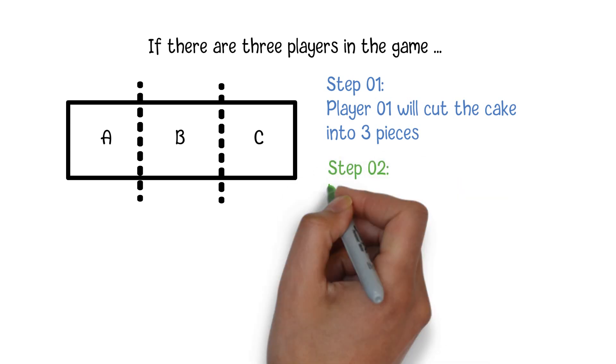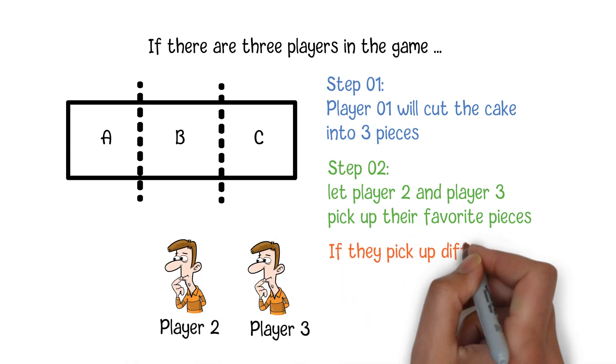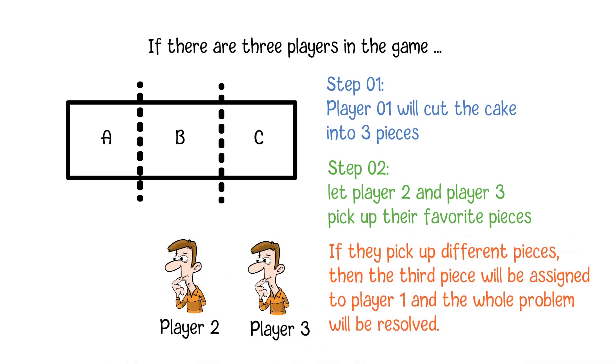The second step, let player 2 and player 3 pick up their favorite pieces. If they pick up different pieces, then the third piece will be assigned to player 1 and the whole problem will be resolved. Everybody will be happy with what they get and there will be no envy.